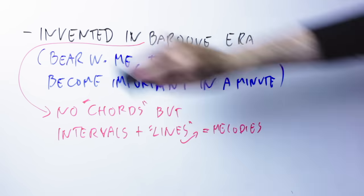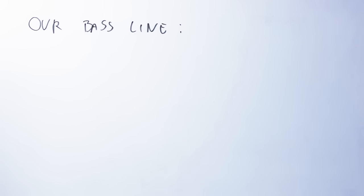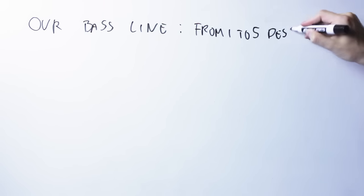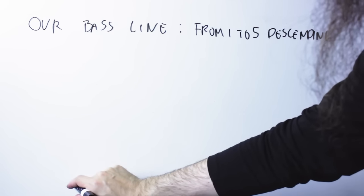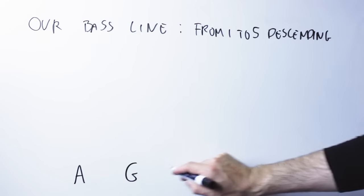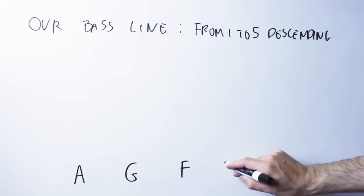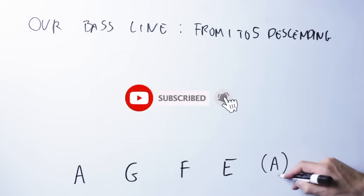Now one of the bass lines that those Baroque musicians wanted to harmonize was a descending bass line starting from the first note of the key and going down to the fifth note of the key. So in A minor that will be A, G, F, E. So the first note of the key in A minor, then the 7th, the 6th and the 5th.